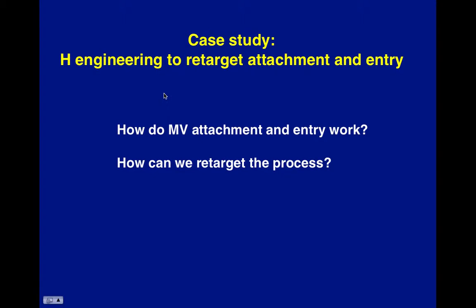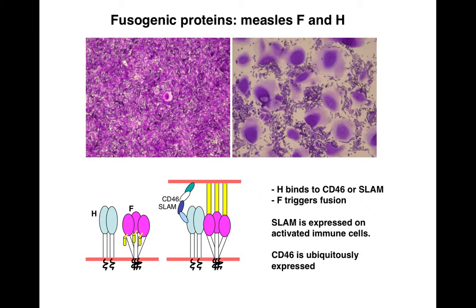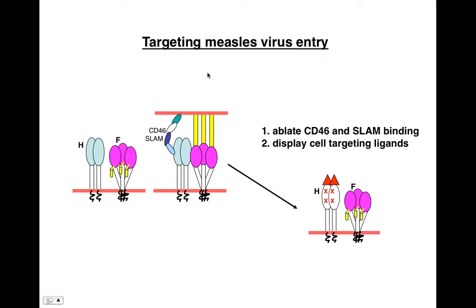The case study: hemagglutinin reengineering to retarget attachment and entry. How does measles virus attachment and entry work, and how can we retarget the process? For the fusogenic proteins: measles F is the actual fusion protein — it causes fusion with the host. H binds a receptor like CD46 or SLAM, then signals the F protein to fuse. This is a mechanical process that brings both envelopes into close enough contact that they merge and let the virus in. SLAM is on activated immune cells; CD46 is ubiquitous; SLAM is the preferred molecule.